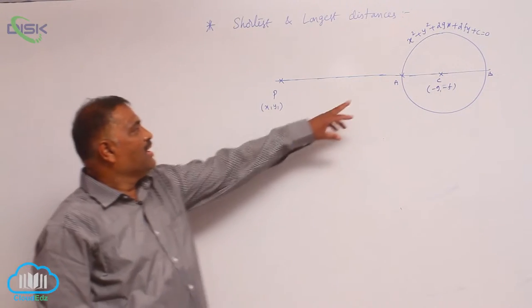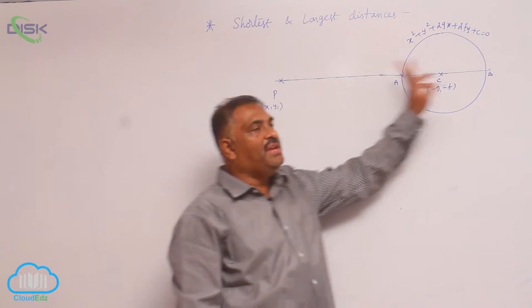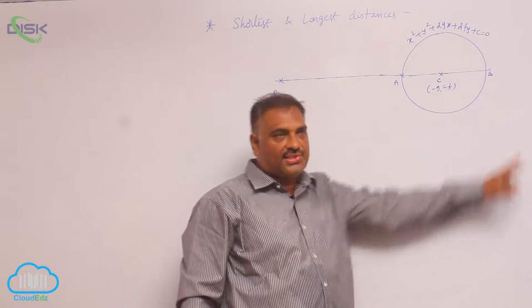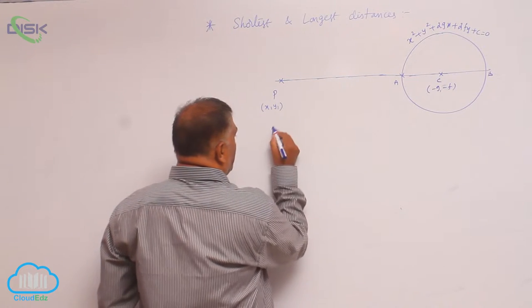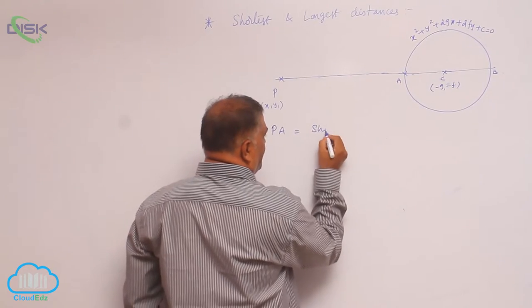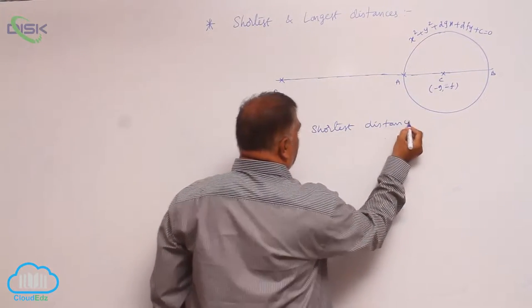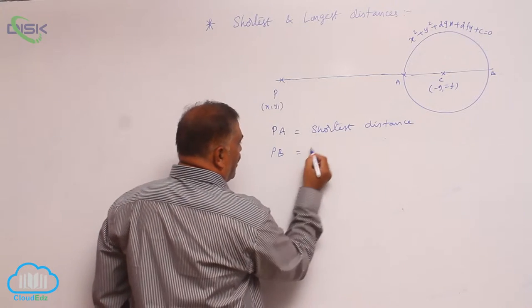Now PA is called the shortest distance and PB is called the longest distance.